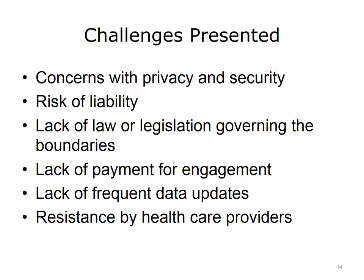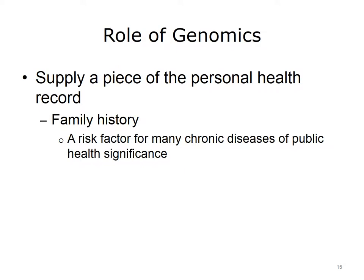To conclude this unit, the role of genomics in consumer health informatics will be explored. According to CDC, by studying the relationship between genes, environment, and behaviors, researchers and practitioners can learn why some people get sick while others do not. Family health history information can also help to identify people who may have a higher risk for certain diseases. Better understanding of genetic and family history information can help researchers and practitioners identify, develop, and evaluate screening and other interventions that can improve health and prevent disease. Individuals can contribute to their health by keeping records of their family health information and sharing this with their doctor and family members. The family history, being a piece of the personal health record, plays a role in consumer health informatics.